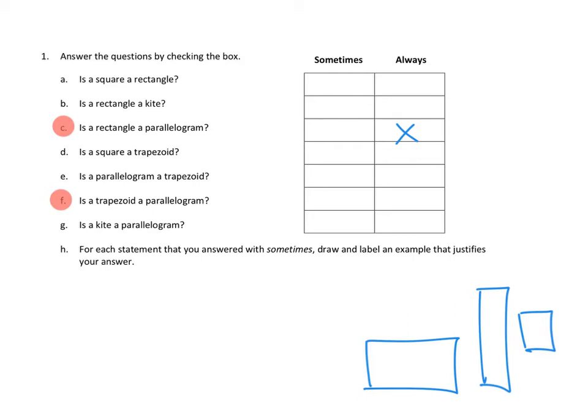So I think for a trapezoid, sometimes a trapezoid is a parallelogram, but not always. I can think of trapezoids like this, where these two sides are parallel, but these two sides are definitely not. But I can also think of trapezoids where both the top and bottom sides are parallel, and the left and right sides are parallel. Those are both trapezoids, but only one of them is a parallelogram. So I think that's the sometimes part.